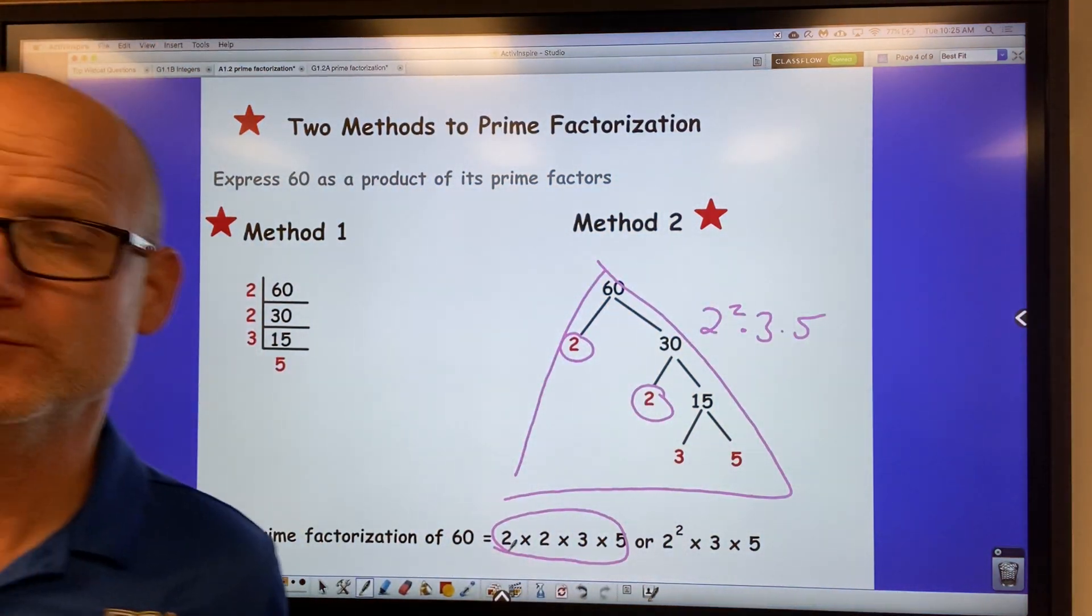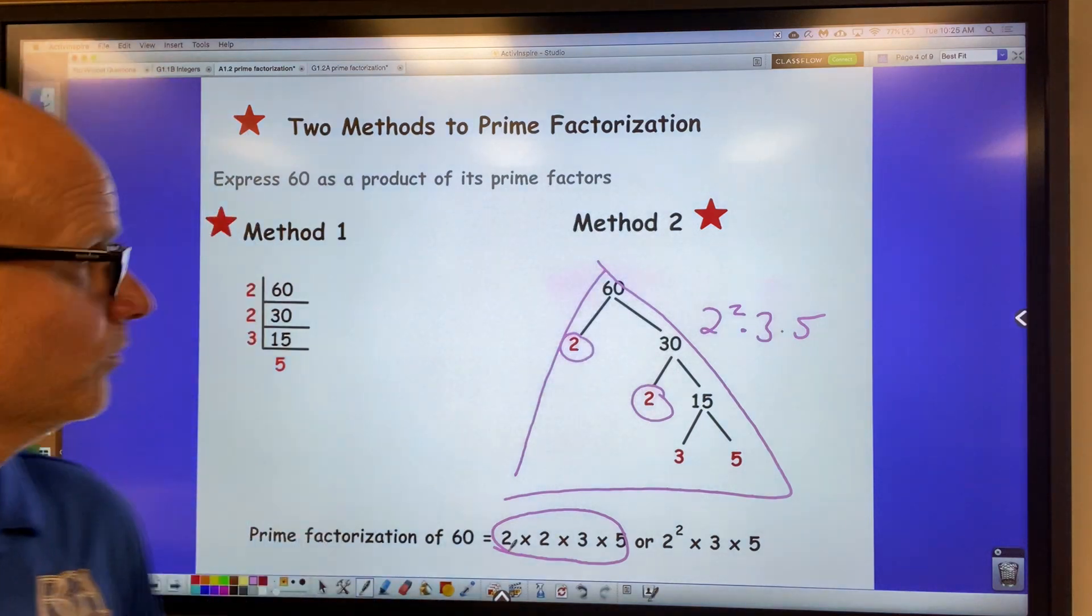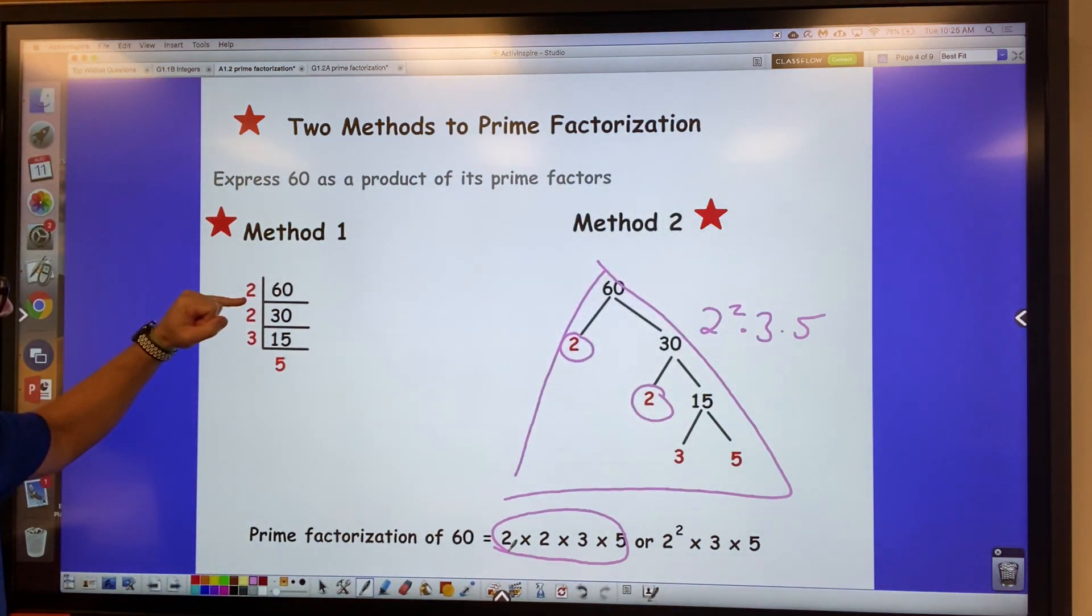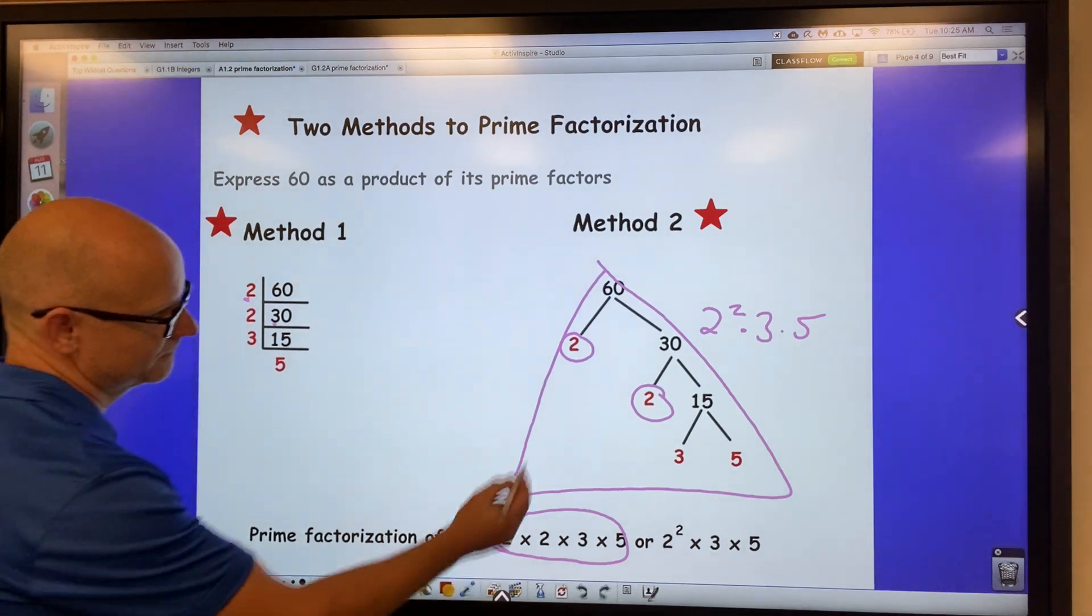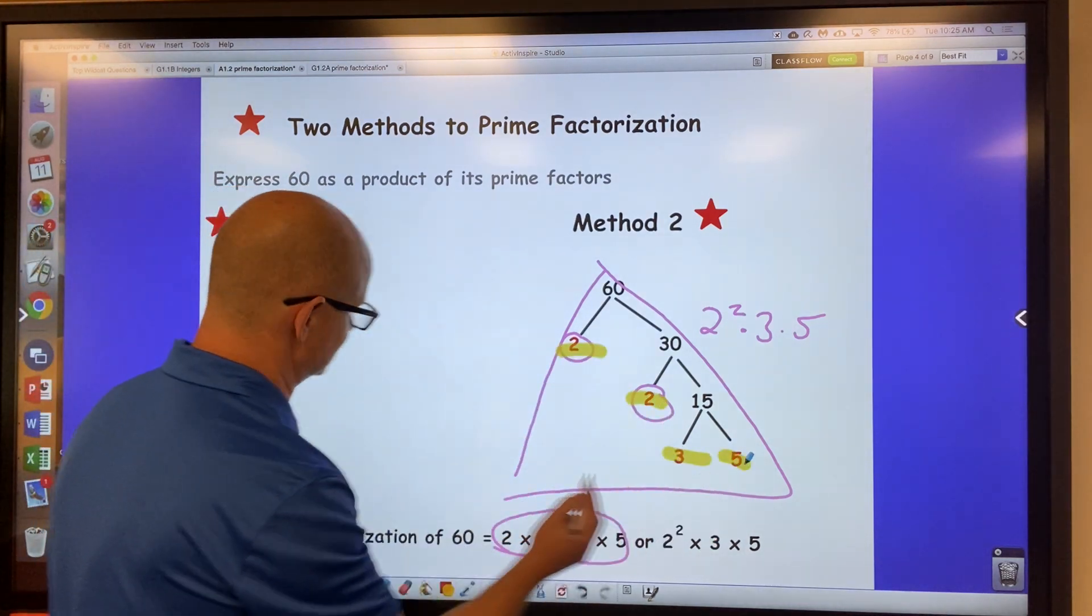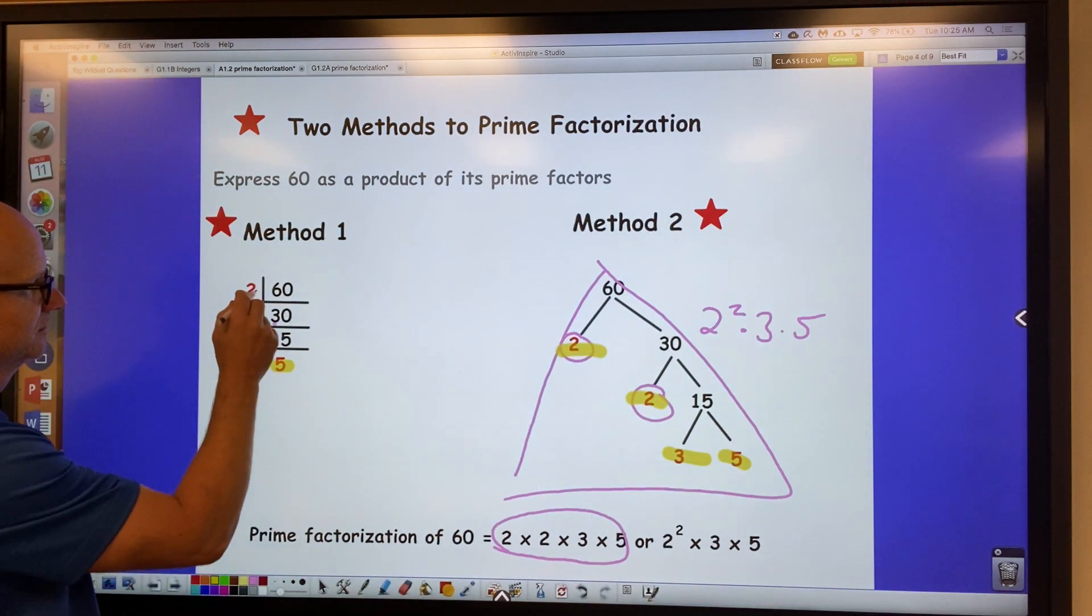Another method is this one. I very rarely use this method, but some of you guys might like this. And so here they just write 60 and then they factor out a 2. So now if you divide it by 2, you get 30. They factor out a 2. If you divide by 2, you get 15. If you factor out a 3, you get 5. And again, you still end up with the same prime numbers.